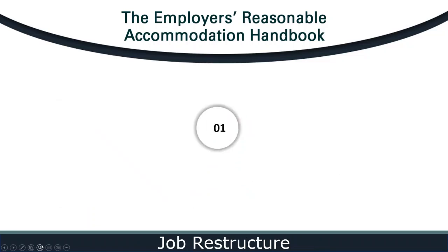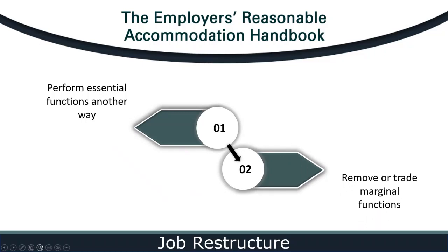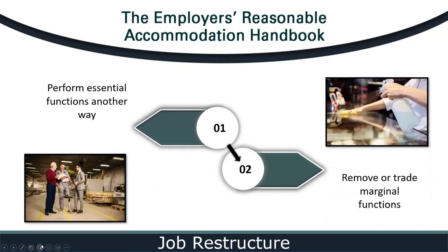How can an employer restructure a job as an accommodation? Restructuring the job means identifying another way to perform the job's essential functions or considering whether marginal functions can be removed or traded with a coworker. For example, if an employee's physical disability limits their endurance, an employer could permit the employee to perform the more strenuous essential functions when their energy levels are at their best. An example from the EEOC involves a member of a cleaning crew who wears a prosthetic leg, limiting his ability to climb steps — making it difficult to sweep the steps, which is a marginal function. Another crew member is assigned to clean the break room. As a reasonable accommodation, the employer swapped these two employees' marginal functions.